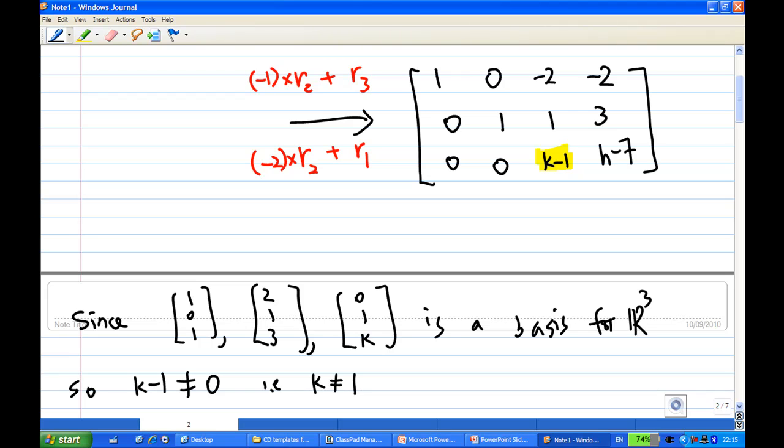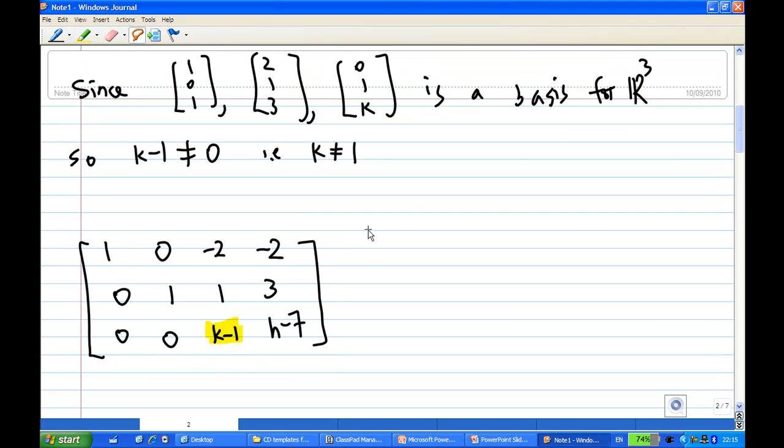So if k not equal to 1, we can divide the third row by k minus 1. So I'm going to divide the third row by k minus 1, times 1 over k minus 1. This will create a leading 1. This will give me (1, 0, -2, -2), (0, 1, 1, 3), then (0, 0, 1, (h-7)/(k-1)). Because k minus 1 is not equal to 0.